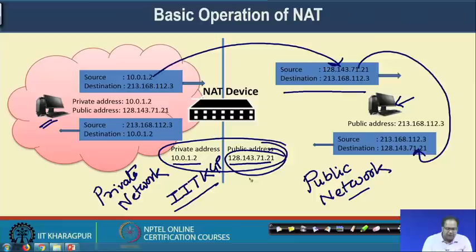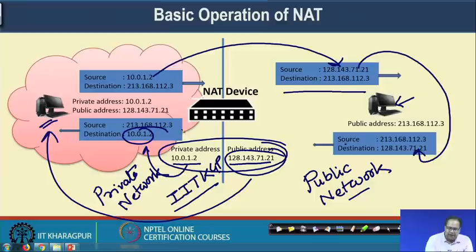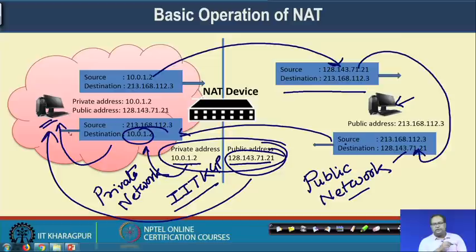Once the destination receives the packet, it generates a reply and puts the source IP as the destination IP. The destination IP 128.143.71.21 is associated with the NAT device — the NAT device has a pool of IP addresses associated with it, so any packet to those IP addresses is delivered to that NAT device. The NAT device looks into the NAT table to find the reverse mapping, replaces the destination address with the private address, and the packet is delivered to the internal machine. That is the way NAT works.